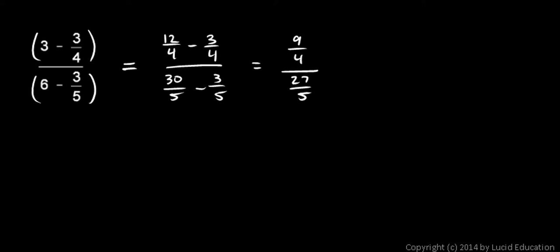Now we have a little bit simpler problem. We can do this division now. We'll be taking 9 fourths and dividing it by 27 fifths.